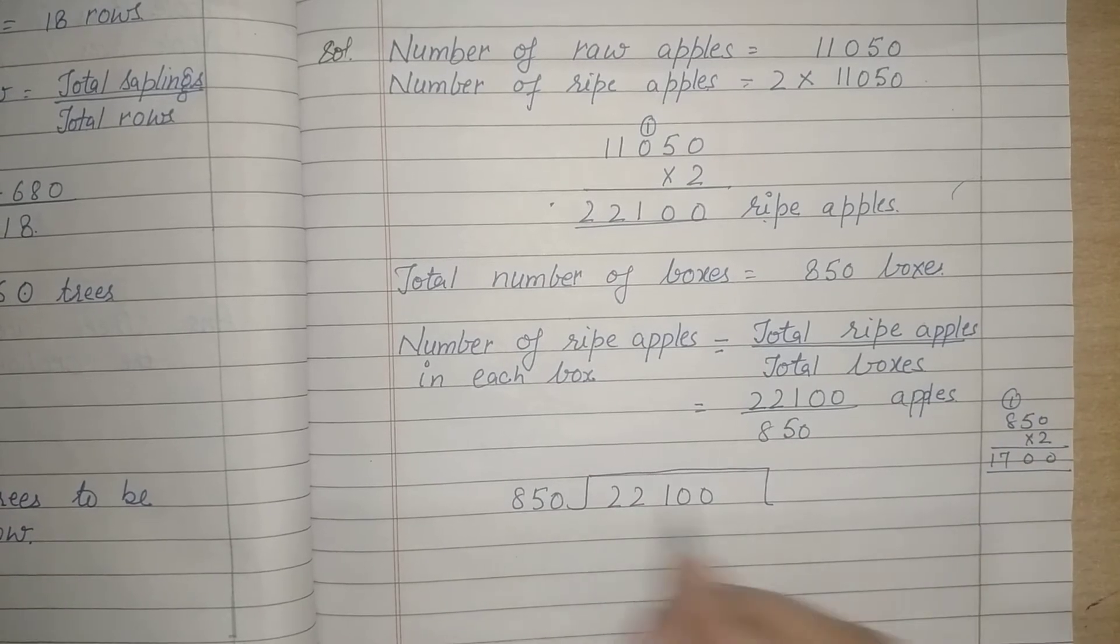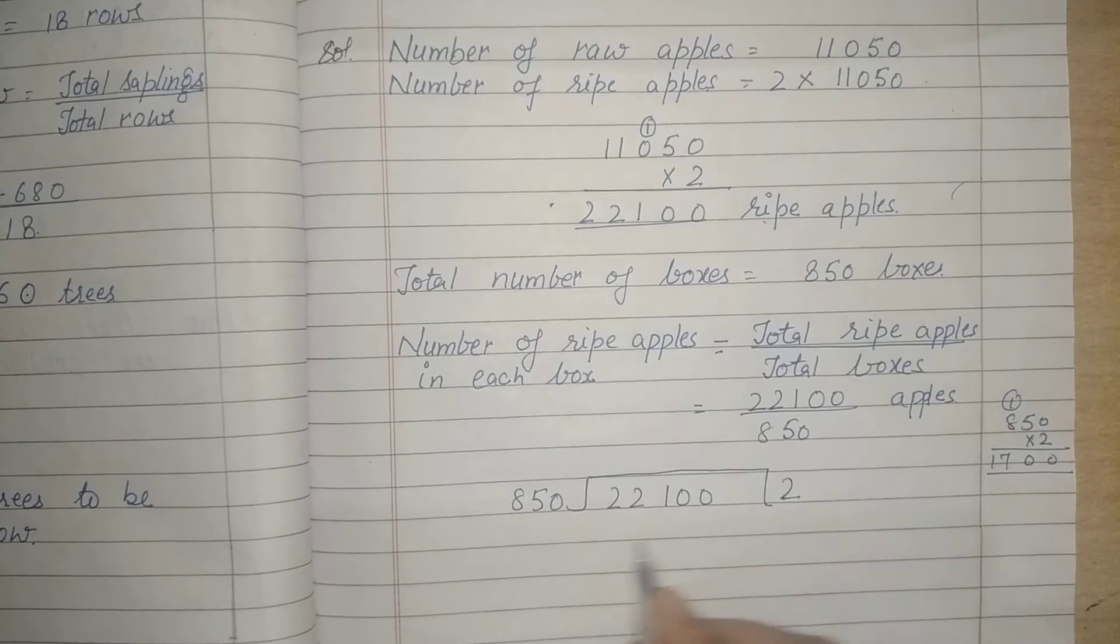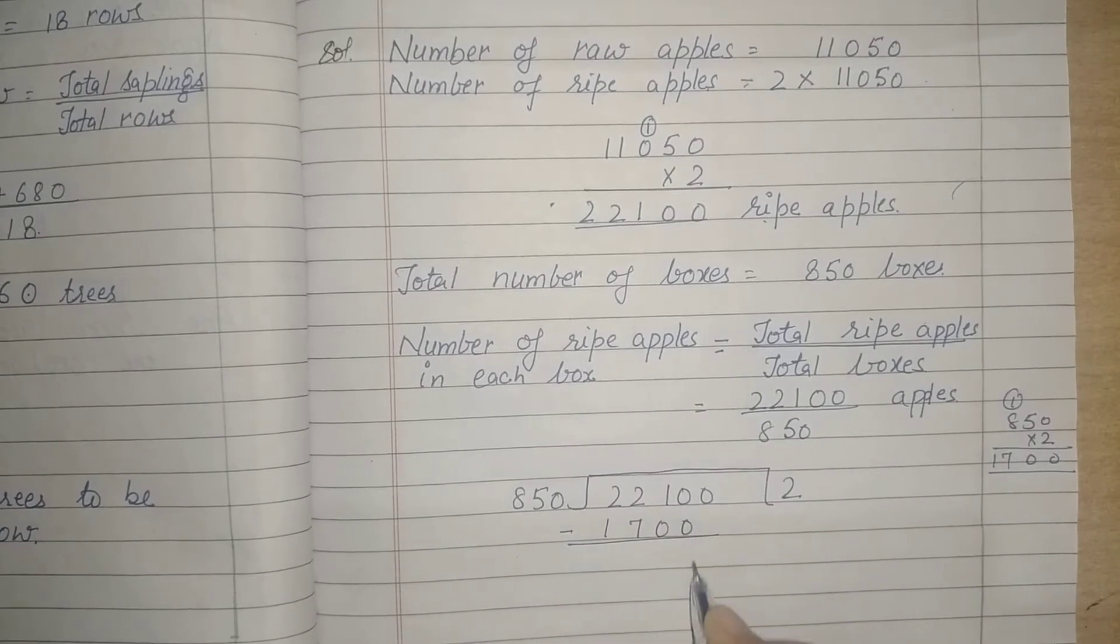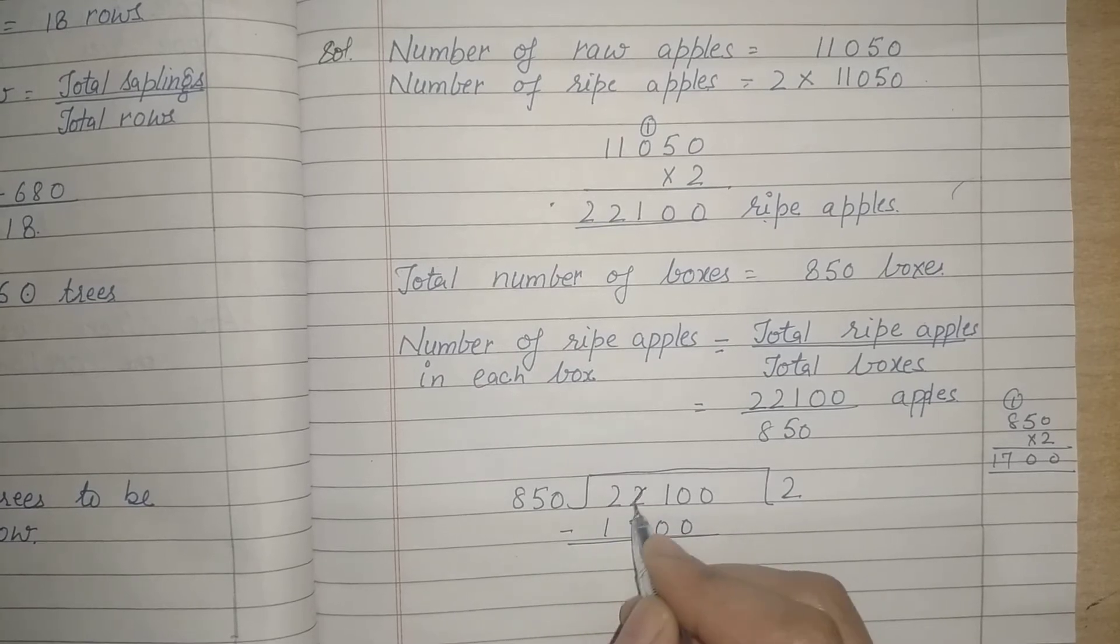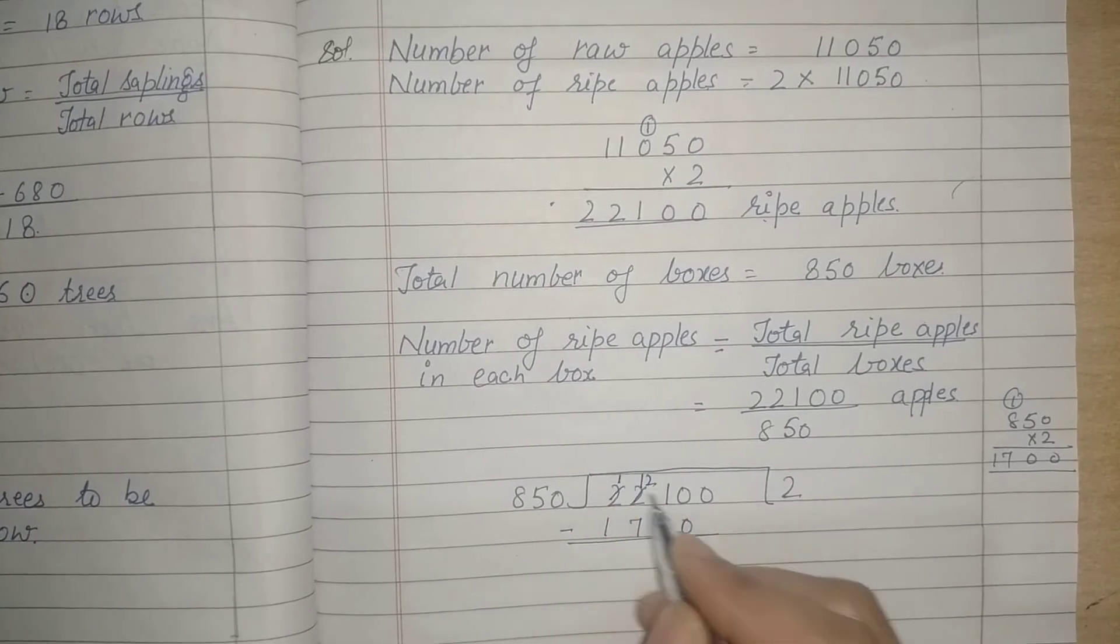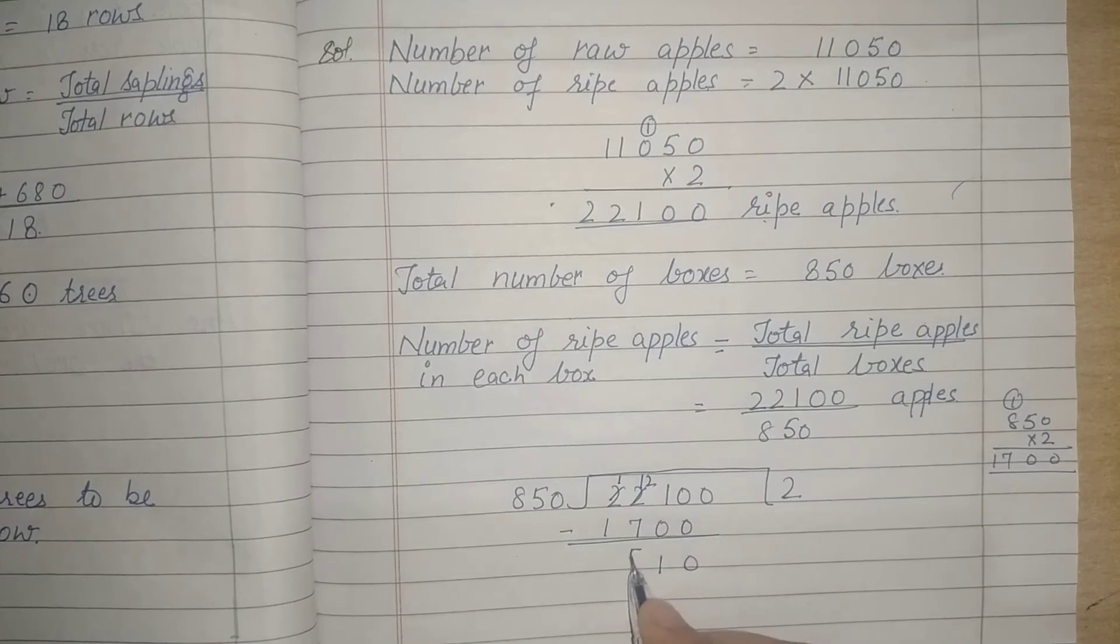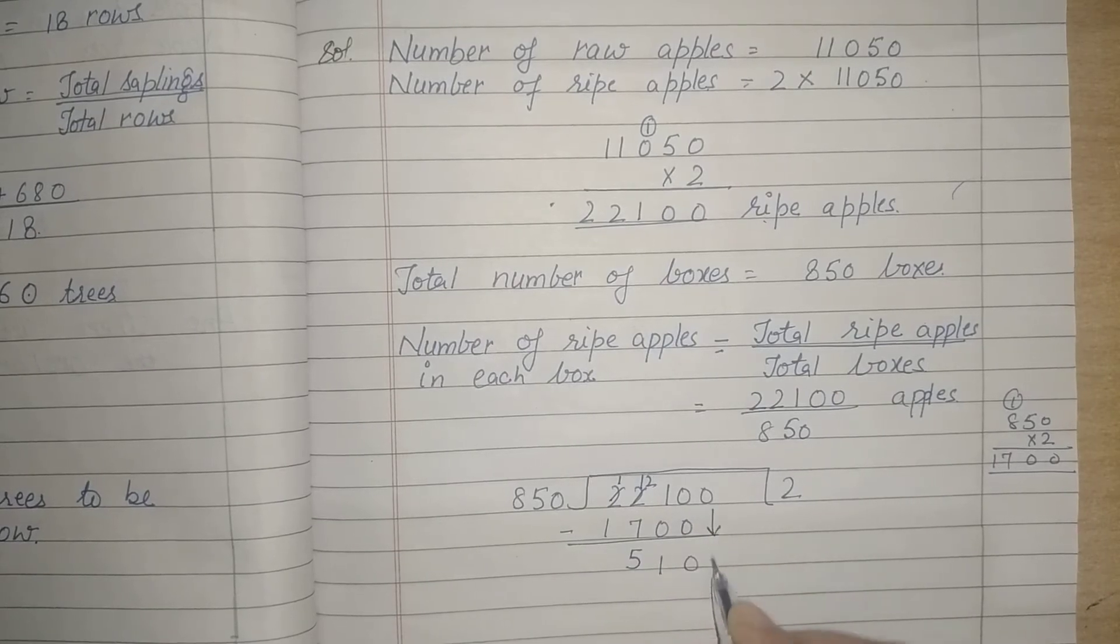So this is 1700. This is 72. This is 1700 minus 0, 1, 12, borrow here, 12 minus 7 is 5. Now we will write down the next 0.